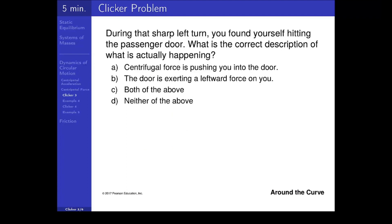Let's try a conceptual question. During the sharp left turn, you found yourself hitting the passenger door. So you're driving your car, you're making a sharp left turn, and you find yourself hitting the passenger door. What is the correct description of what is actually happening?